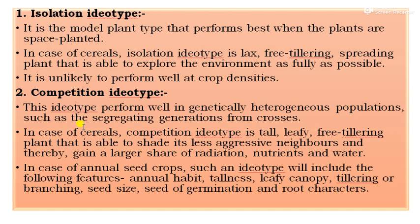The second type is competition ideotype. This ideotype performs well especially in genetically heterogeneous populations such as segregating generations from crosses. In the case of cereals, the competition ideotype is tall, leafy, pre-tillering plant which is able to shade its less aggressive neighbors, thereby gaining a larger share of radiation, nutrients, and water than other crops. In the case of annual seed crops, such an ideotype includes the following features: annual habit, tallness, leafy canopy, tillering or branching, seed size, seed germination, and root characters.